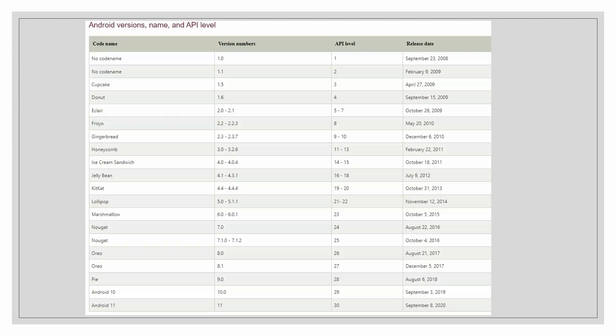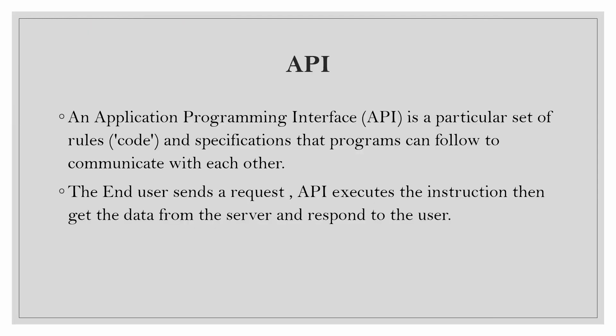Each year Android releases a new version with a higher API level. You might be wondering what an API is — API stands for Application Programming Interface. It is a particular set of rules and specifications that programs can follow to communicate with each other.